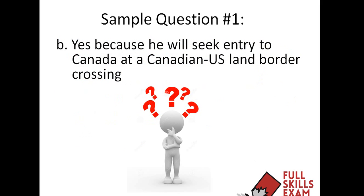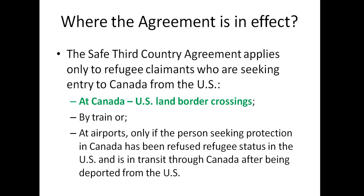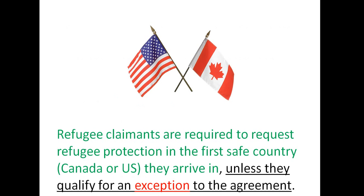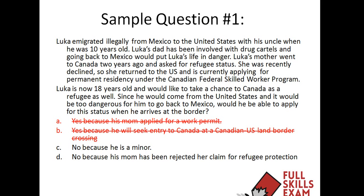Let's look at option B: yes, because he'll seek entry to Canada at a Canadian-US land border crossing. This one is a bit tricky. The Safe Third Country Agreement does apply to people coming at a US land border crossing, but that doesn't really matter in this case — because that just means if he had met one of the exceptions, he'd be able to apply for refugee protection in Canada rather than the US. Since he doesn't meet any of the exceptions, it doesn't matter where he arrives. So B is not the correct answer either.